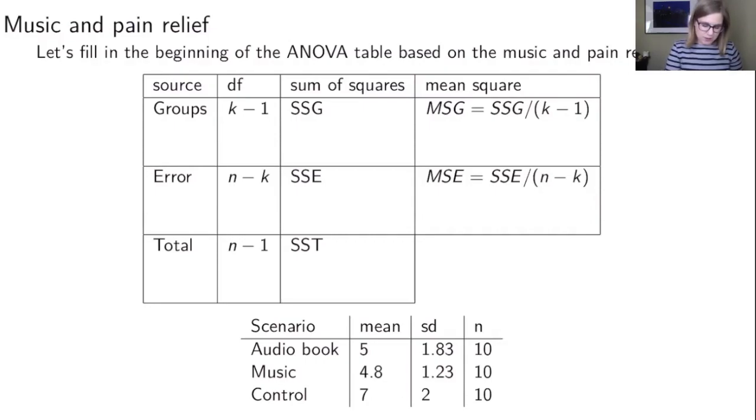So for our degrees of freedom for the groups we've got our number of groups which is 3 minus 1 so that's going to be 2. Then when we're talking about n we mean n the overall sample size which is 30. And so it's going to be 30 minus 3 is 27 for the degrees of freedom for the error. And then for the total we're going to have 30 minus 1 is 29. And we can just check our work, we want to make sure that 2 plus 27 equals 29. Yep so I think we've done that correctly. That's good.